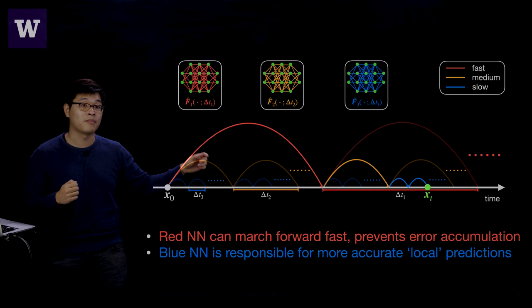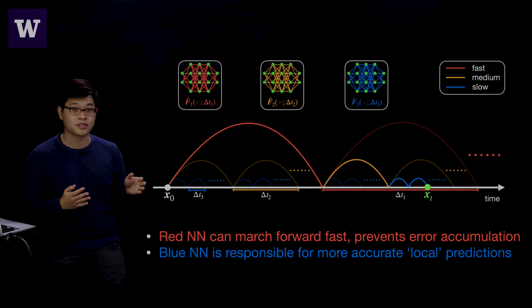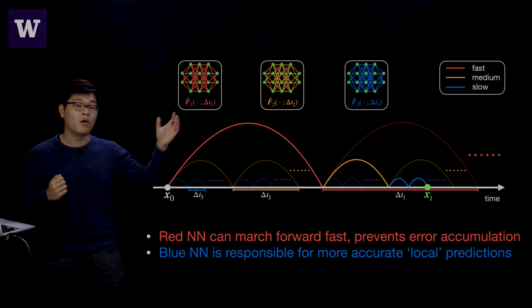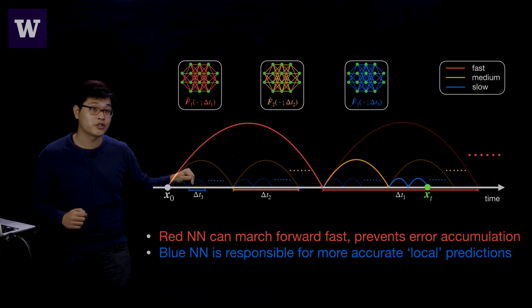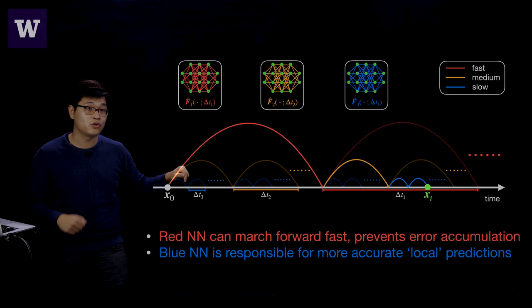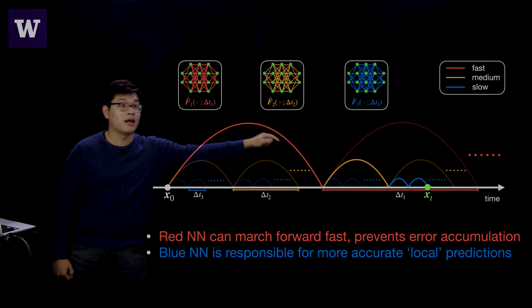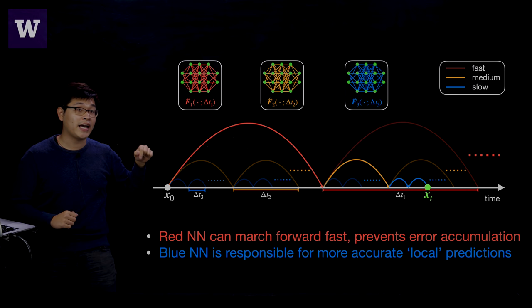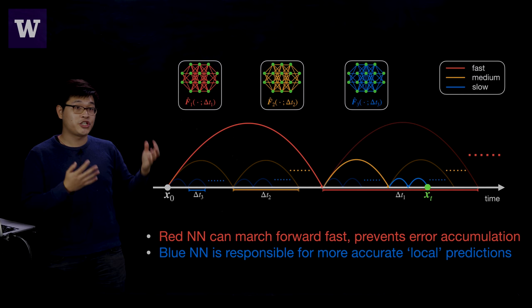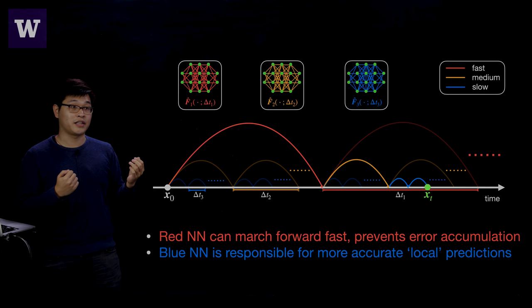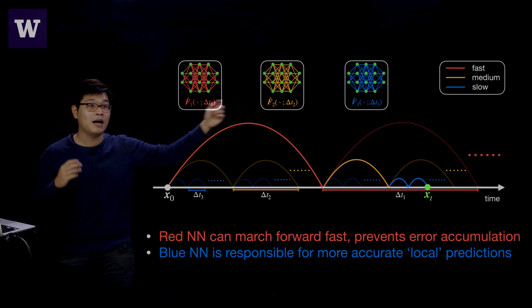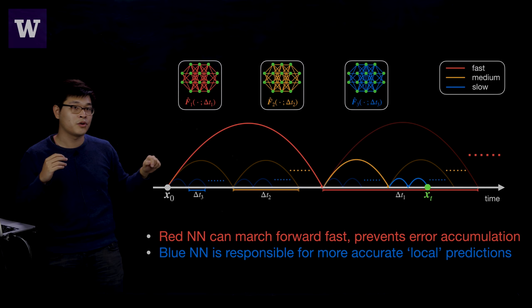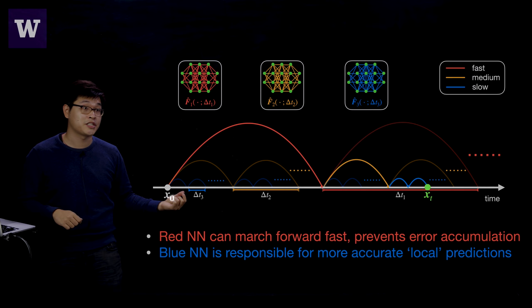Consider the case where we only have the red network. If you want to go just a little bit into the future, the best you can do is take x_0 and the next red step, then do an interpolation — but nothing guarantees accuracy there. That's where the blue network helps: it complements the red network by shooting you just a little bit away from where you were, giving you accurate information at finer time scales. That's how we couple these different-scale networks.